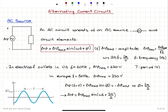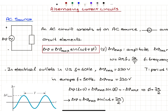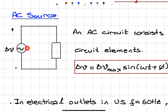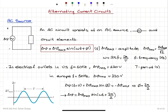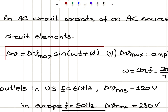Let's start with what is an AC alternating current source. We show it with a circle and a sine wave inside, representing an AC source. An AC circuit consists of an AC source connected to a set of circuit elements. The voltage provided by this AC source is sinusoidal: it is ΔV_max times sine(ωt).